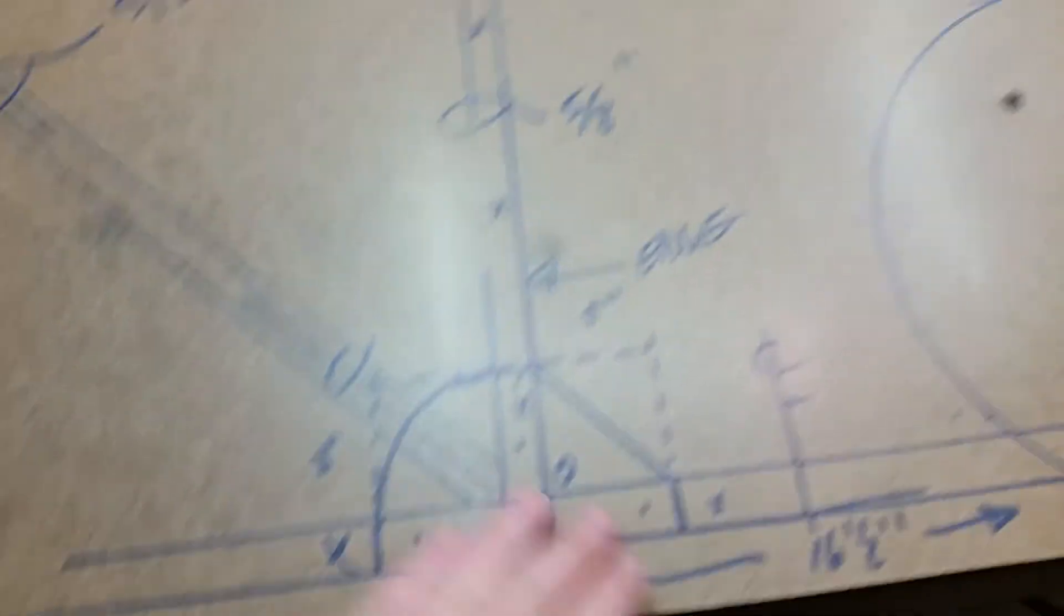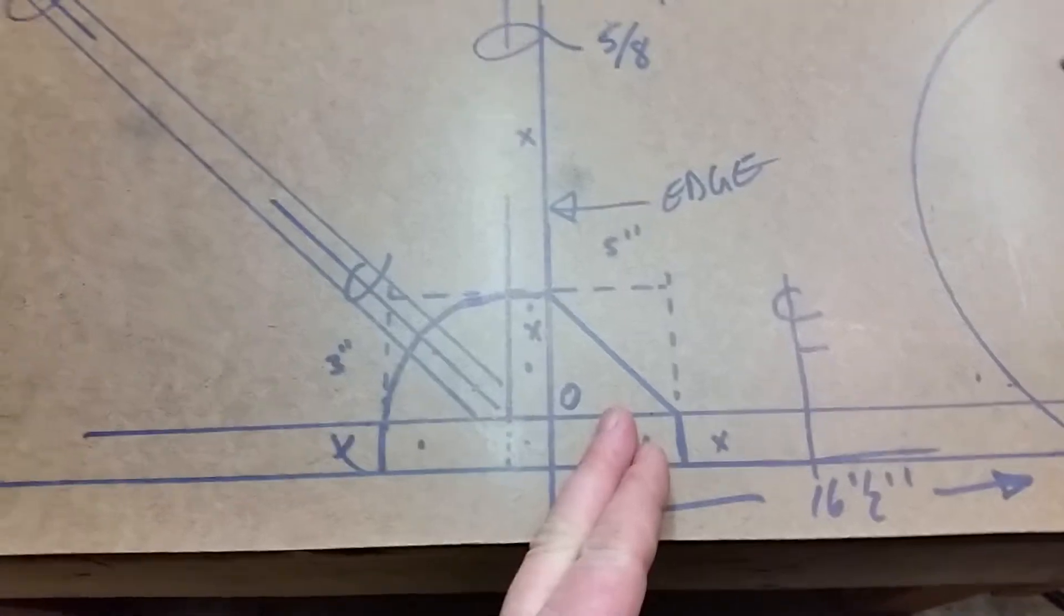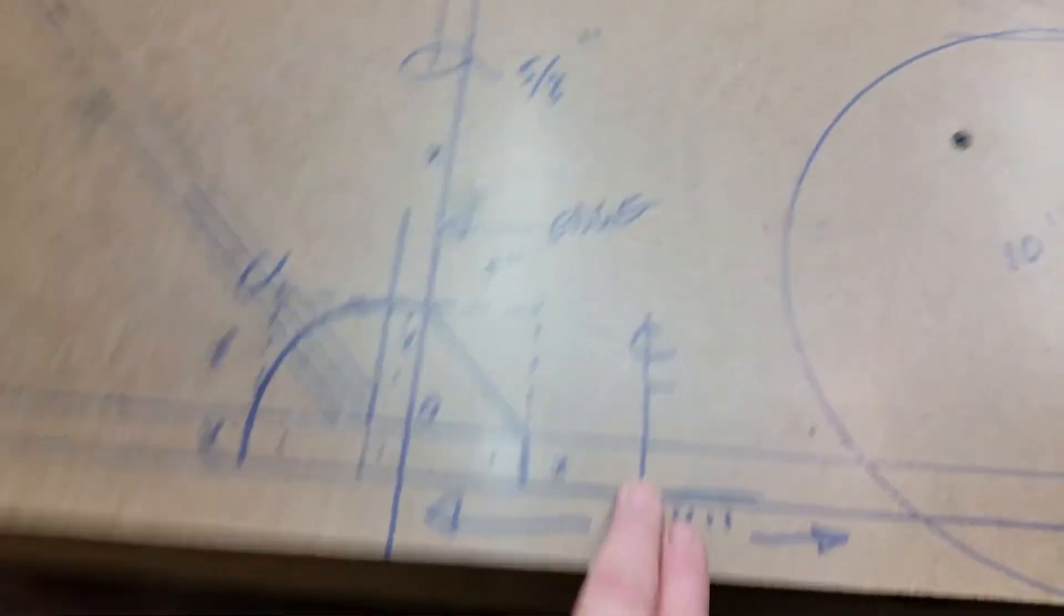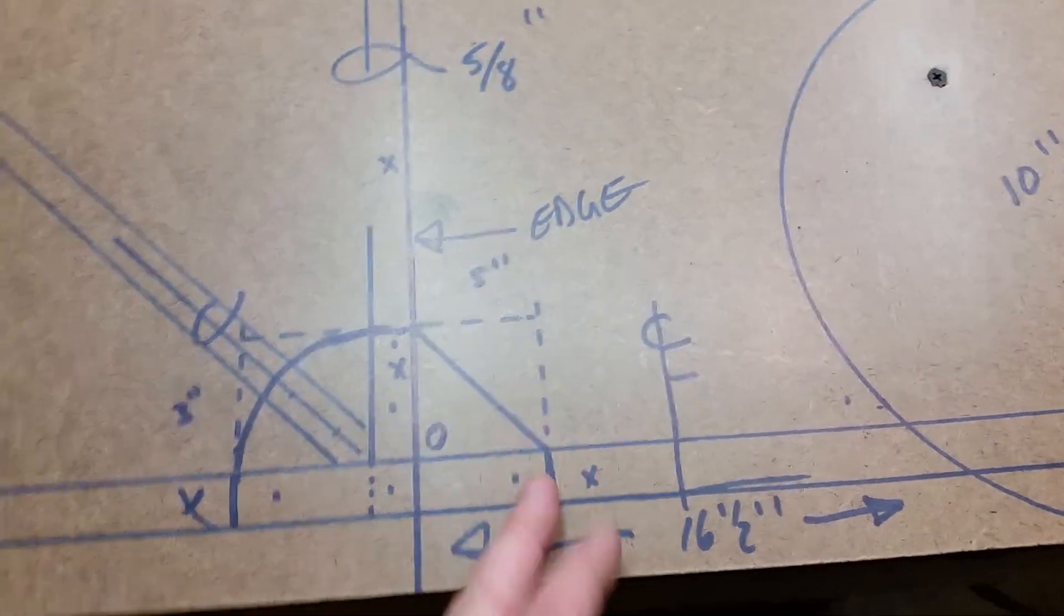Well, you want your hinge to be kind of close to that because it's a real solid structure out there. So we just sort of shoot from the hip on that. I'm about two inches away from here. Just get it close.